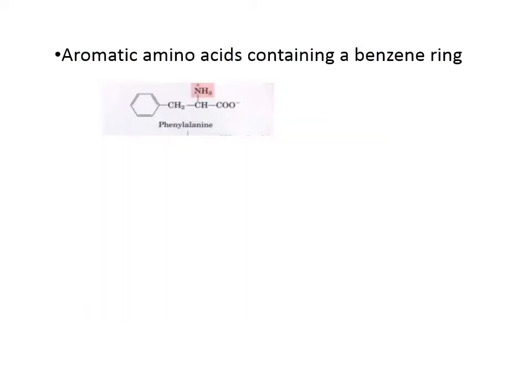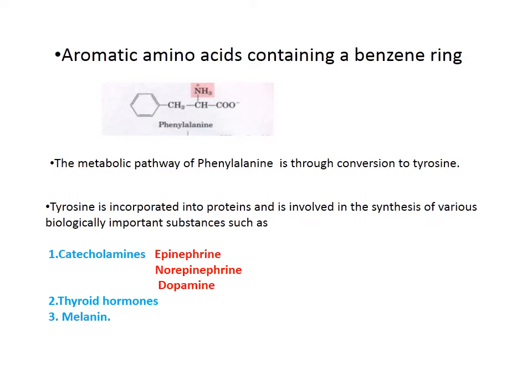Both phenylalanine and tyrosine are classified under aromatic amino acids containing a benzene ring. The main metabolic pathway of phenylalanine is through its conversion to tyrosine — phenylalanine is converted to tyrosine.